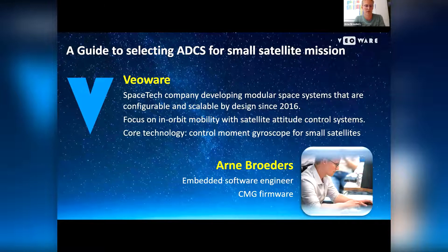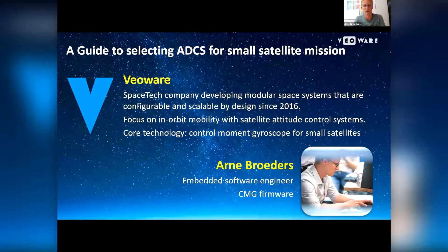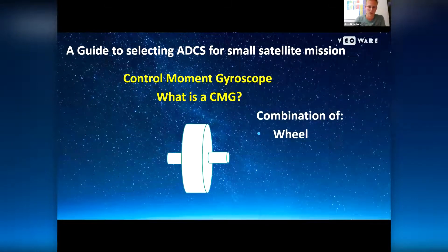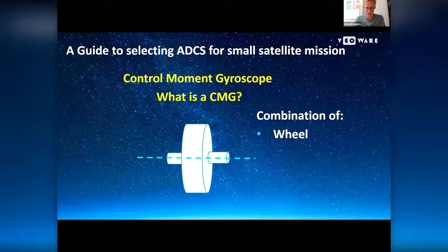With small satellites, we understand satellites smaller than 500 kilograms. I am Arnaboudis, the embedded software engineer of Fioware, and currently I am mainly busy with the firmware for our CMGs. So what is a CMG? The CMG mainly consists of a wheel that is mounted on a certain axis that can spin. This we will call the spin axis.